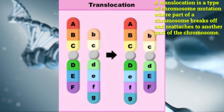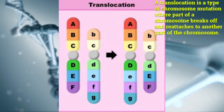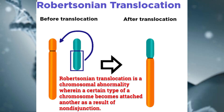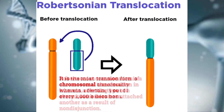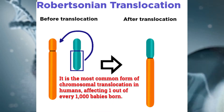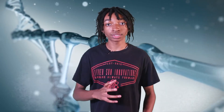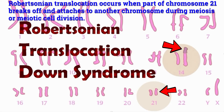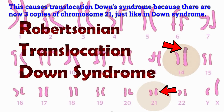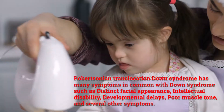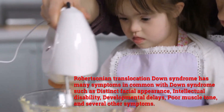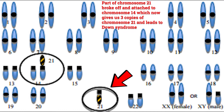Next, we have translocation. A translocation is a type of chromosome mutation where part of the chromosome breaks off and reattaches to another part of the chromosome. The most common example of translocation mutations is Robertsonian translocation — a chromosomal abnormality wherein a certain type of chromosome becomes attached to another as a result of non-disjunction. It's the most common form of chromosomal translocation in humans, affecting one out of every 1,000 babies born. One example is translocation Down syndrome, which occurs when part of chromosome 21 breaks off and attaches to another chromosome during meiosis, causing three copies of chromosome 21. Looking at the karyotype for Robertsonian translocation Down syndrome, part of chromosome 21 broke off and attaches to chromosome 14, which leads to three copies of chromosome 21 and Down syndrome.